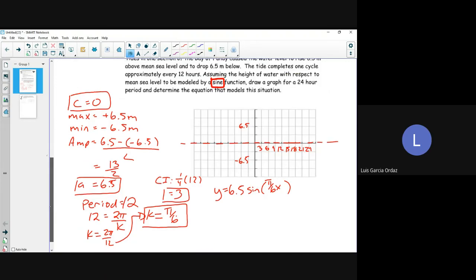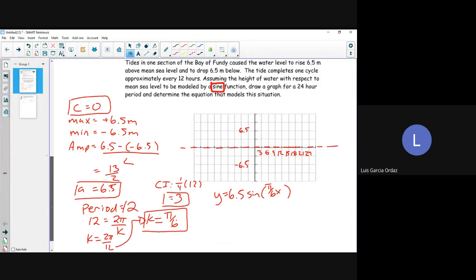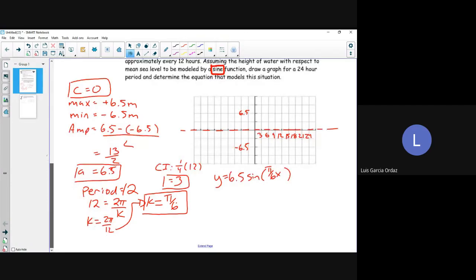But what do we have to do? What is left in the question? The question wants us to graph. So in a 24-hour period, we're just going to focus on the key points. 0, 3, 6, 9, 12. What would our first point be? What is sine at 0 all the time? 0.